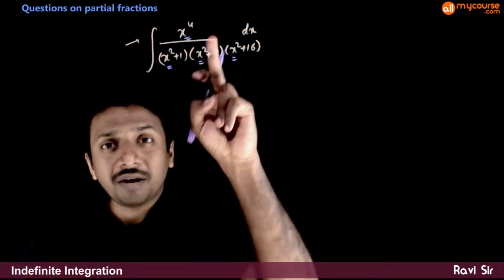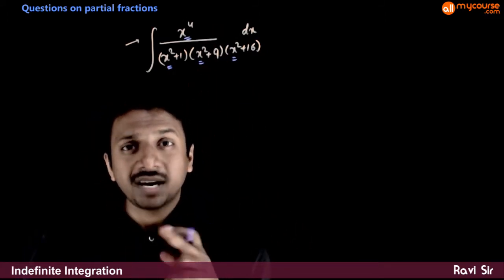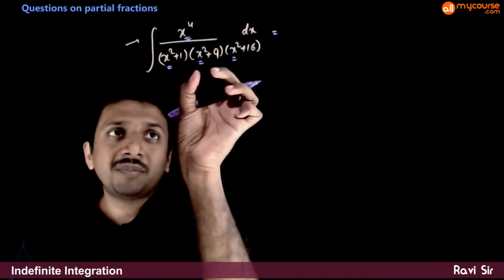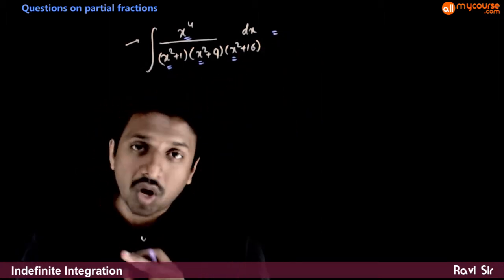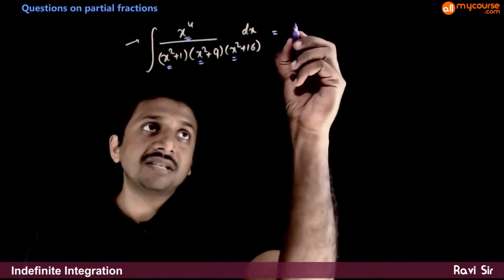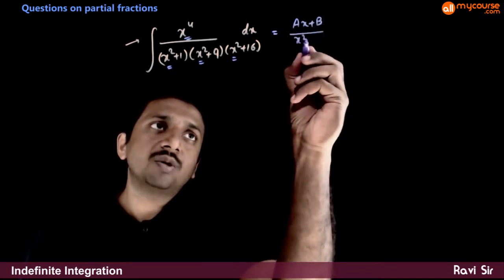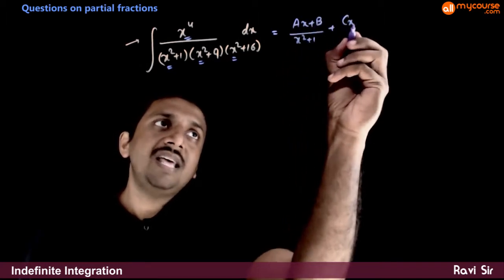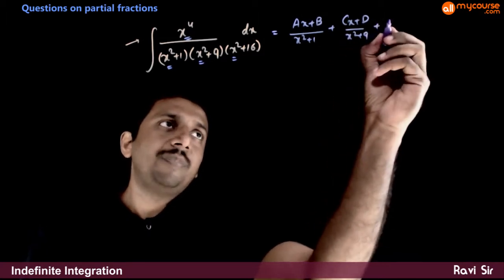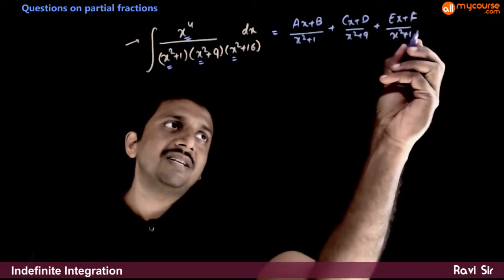If you try to do this by normal partial fractions, it will be a very difficult task because this is a quadratic term, quadratic, quadratic non-factorizing. So if you have to do the actual partial fractions, it has to be like ax plus b by x square plus 1 plus cx plus d by x square plus 9 plus ex plus f by x square plus 16.